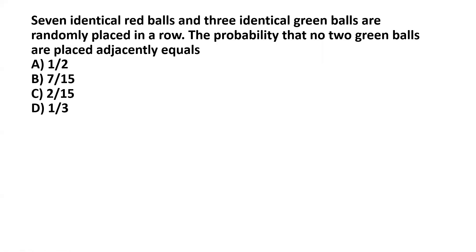Seven identical red balls and three identical green balls are randomly placed in a row. What is the probability that no two green balls are placed adjacently?